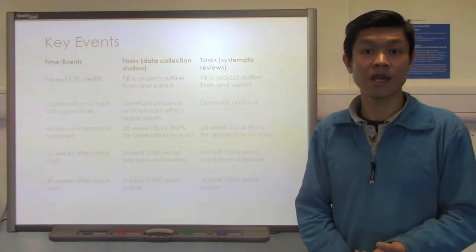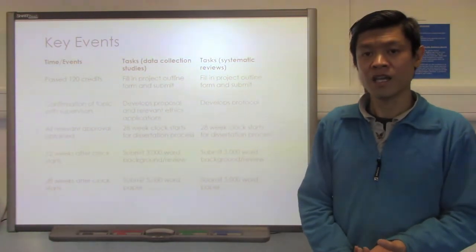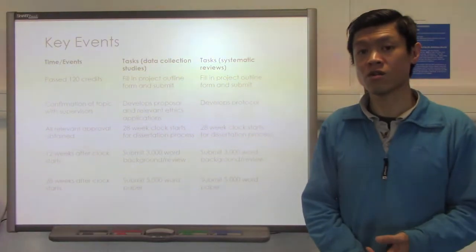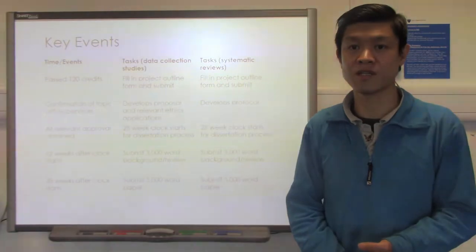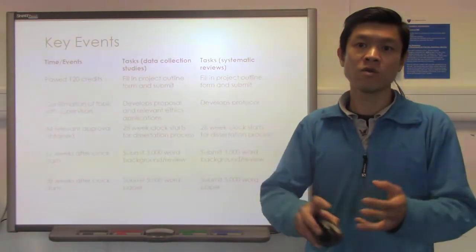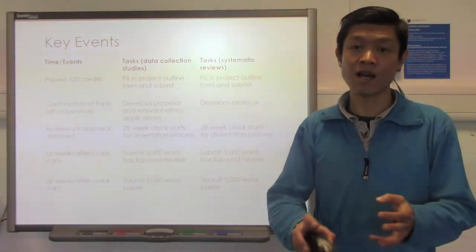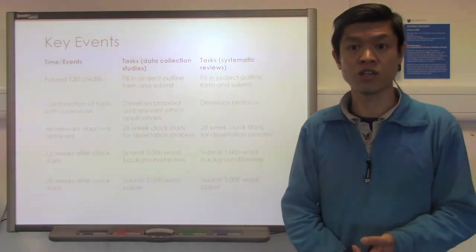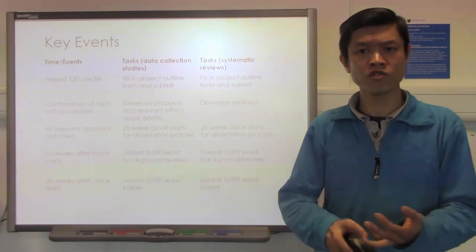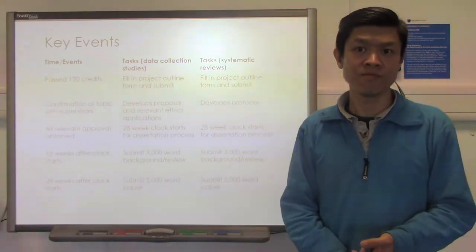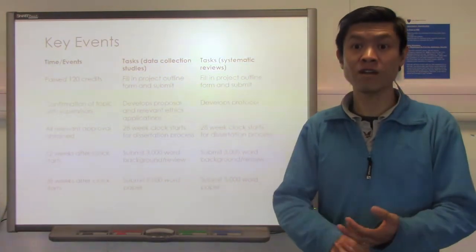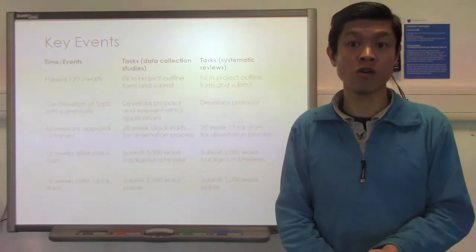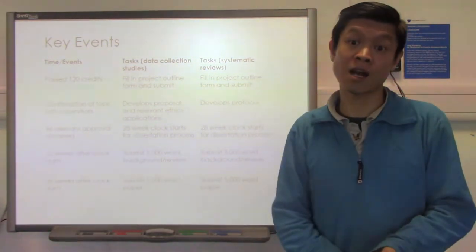We will then look at it, review it, and give you the approval. When all these approvals have been obtained, we can move on to the next stage — and that's when your 28-week clock starts. When we receive notice that you have all your approvals, we will set a date that is the beginning of your 28 weeks. That is the time you are supposed to complete your project, including writing up the dissertation and the submission. We will help keep track and remind you of the deadlines, and we will also give you the final date by which you are required to submit the final dissertation and the intermediate products that come from this module.